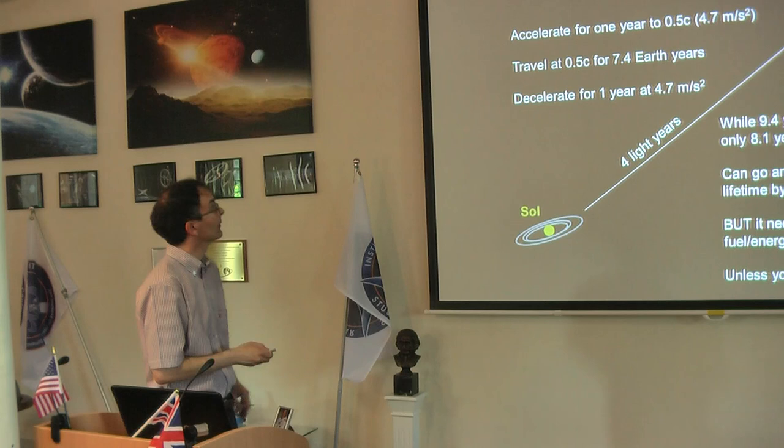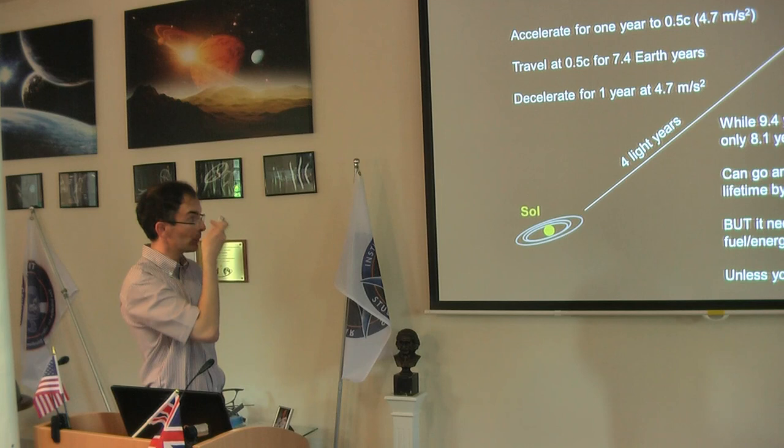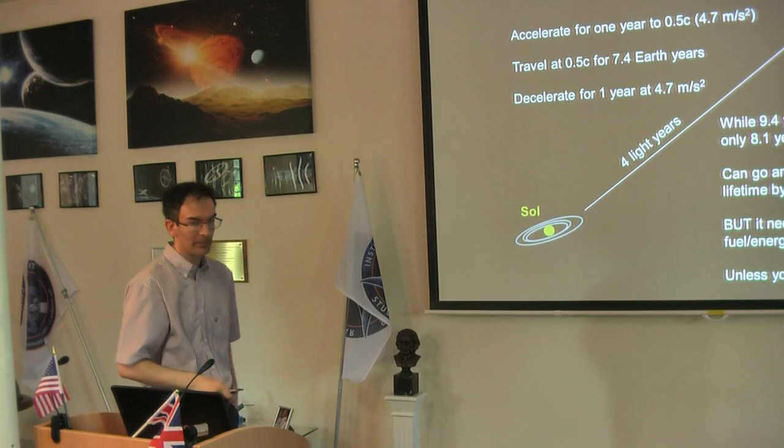So if you assume this, then the Taylor drive gives you about 150 newtons per kilowatt. So you only need about 30 megawatts to power such a thing. So, of course, because of relativity, you can get to Proxima Centauri if the system is correct. In 9.4 years, 8.1 years passes on the ship, which is a time dilation benefit.